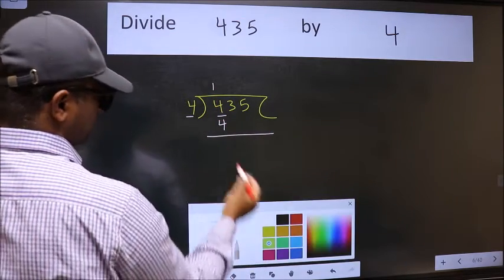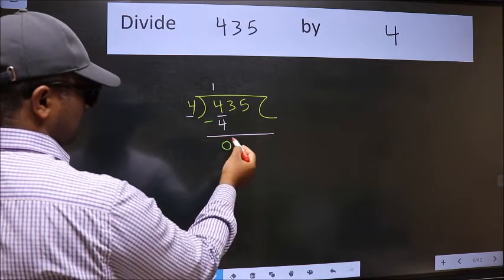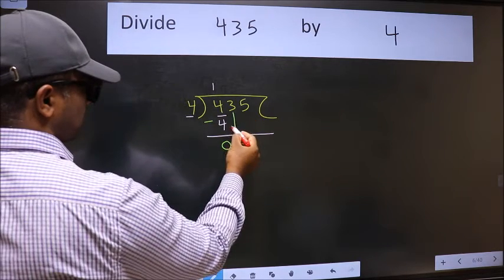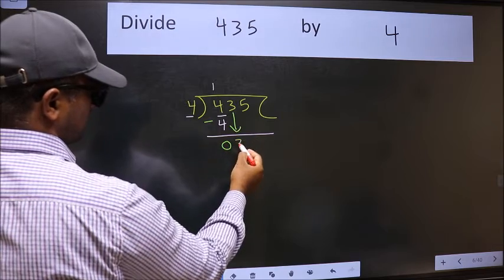Now we should subtract. We get 0. After this, bring down the beside number. So 3 down.